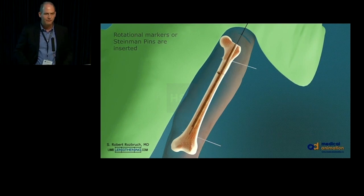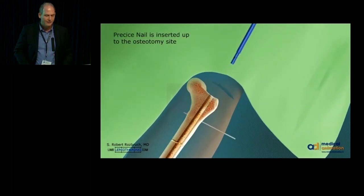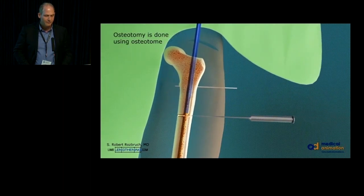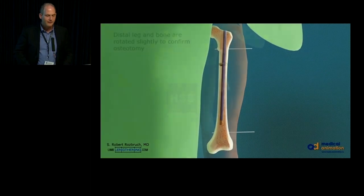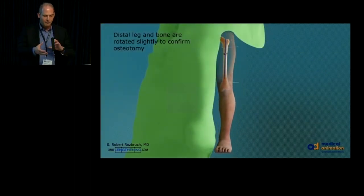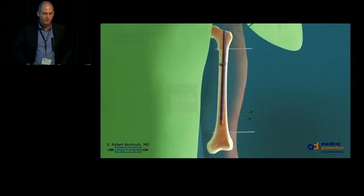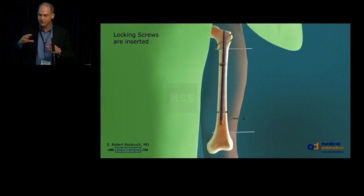We generally are reaming two millimeters over the diameter of the nail. So if I'm putting in a 10.7 millimeter nail, I'm reaming to about 12.5 or 13. Then I take my nail and insert it up to the osteotomy level, and I complete my osteotomy with an osteotome. I put in rotational markers at the top and at the bottom to mark the rotation, because I will then rotate around the nail to confirm that I've completed my osteotomy and correct any rotational deformity.